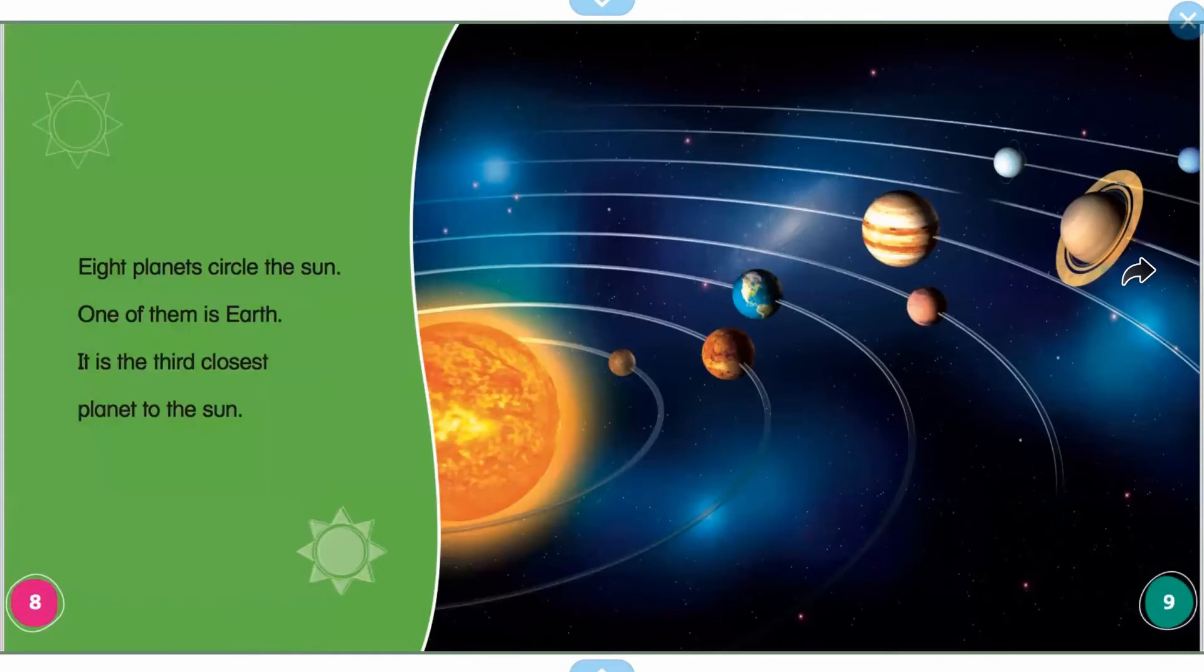Eight planets circle the sun. One of them is Earth. It is the third closest planet to the sun.